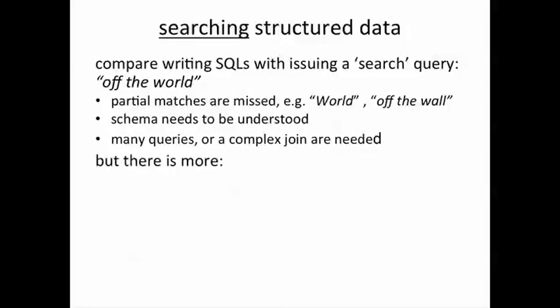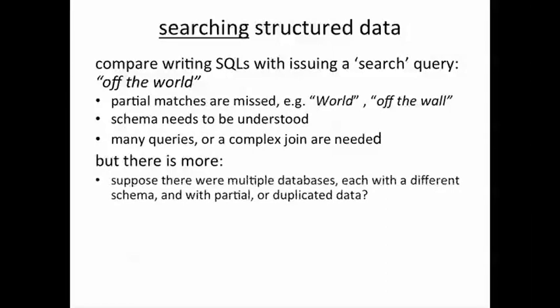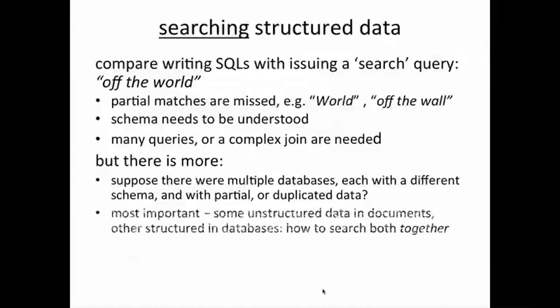But there is even more. Suppose there were multiple databases, each with a different schema and partial or duplicated data across these databases. And suppose the keys used in each database were different with no relationship to each other. Most importantly, suppose we have some unstructured data in documents like text files which contain the lyrics or biographies of artists, alongside others in structured databases like the lyrics database. How do we search both of these together?